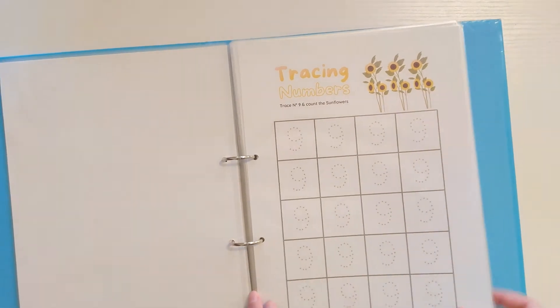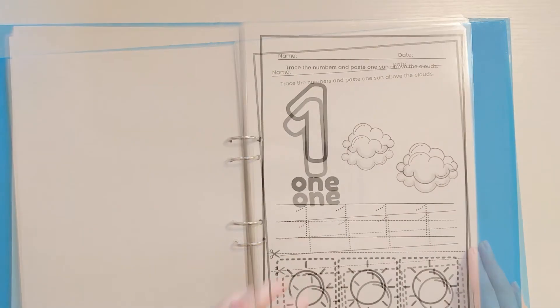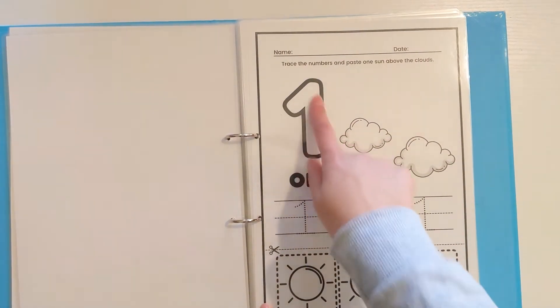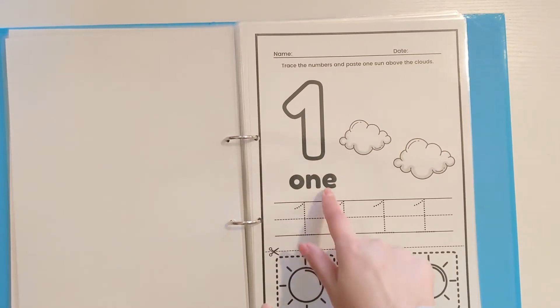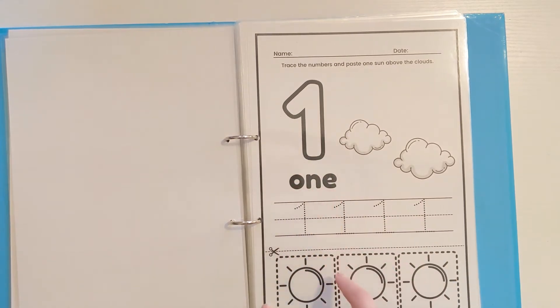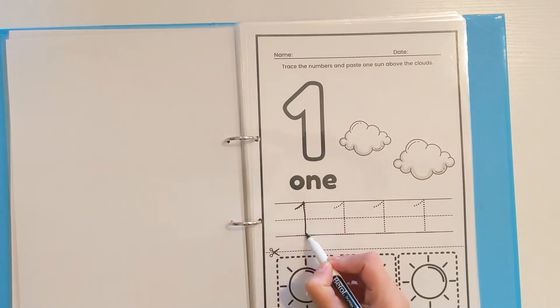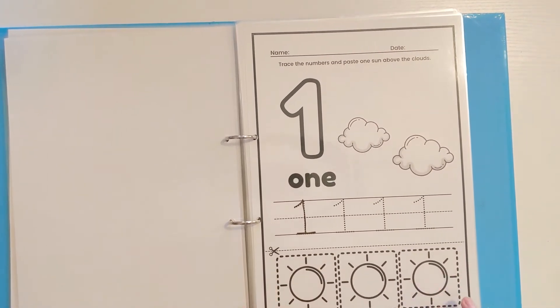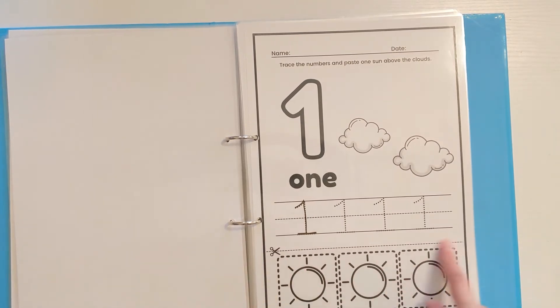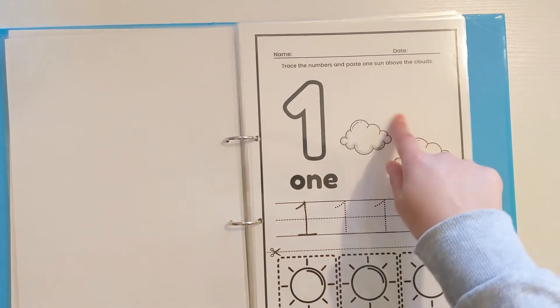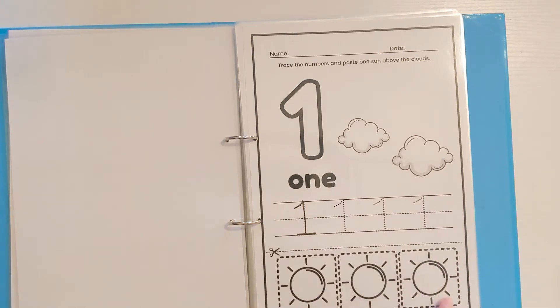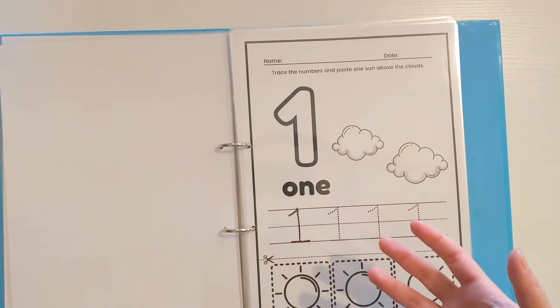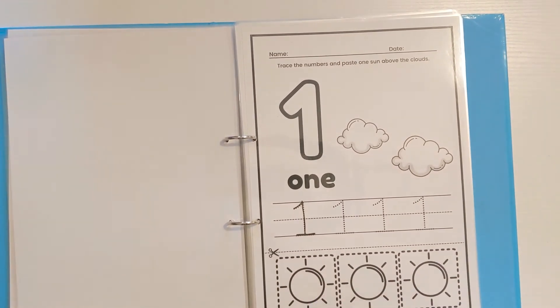Once she's done all of this, I've created some further number worksheets. Trace the numbers and paste one sun above the cloud. We've got an introduction to the written word to match the number, so they can see one means one written here. We've got the dot to dots again. Now we've got a fun little activity. I've got my sheets laminated so I can reuse them, but you can just cut them out so the child can cut and stick the relevant picture where they need to. We've got more pictures than you need so they can actually see that even though they've got three, they only need one. It's about a little bit of comprehension and following instructions.